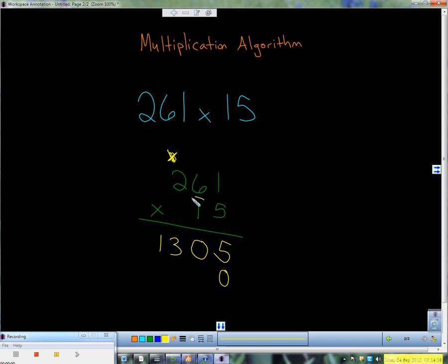Okay, now we're going to take the 1 and we're going to multiply it times that, then times that, then times that. Okay, 1 times 1 is 1, 1 times 6 is 6, 1 times 2 is 2.